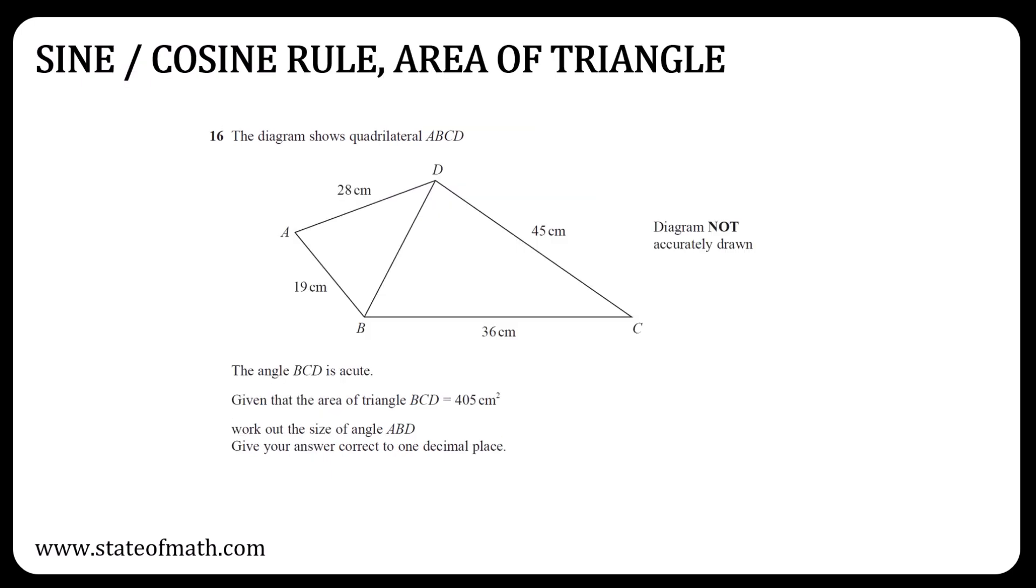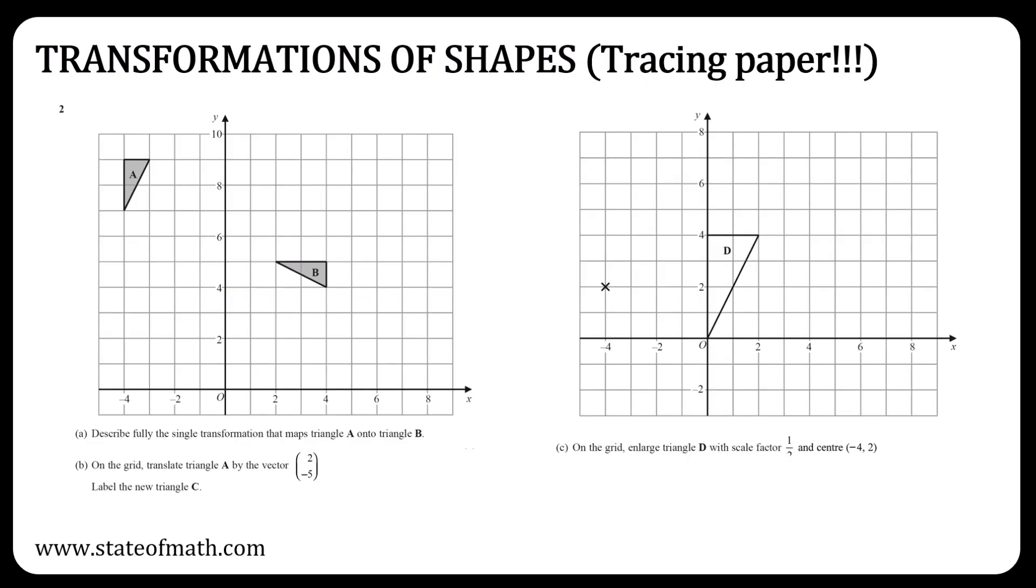Another must-revise topic is trigonometry, and more specifically the sine rule, cosine rule, and the area of a triangle. All three formulas are given in the formula sheet, but make sure you know how to use them. Transformations of shapes is another type of question that was missing. Don't forget to take your tracing paper if your school does not provide you with one.